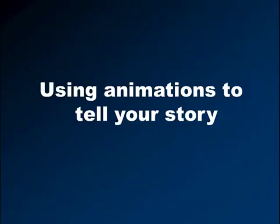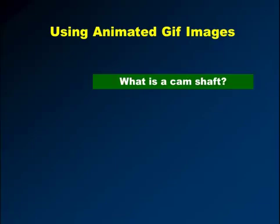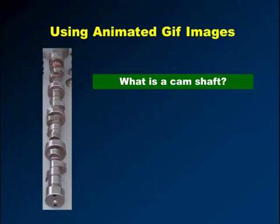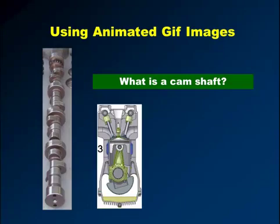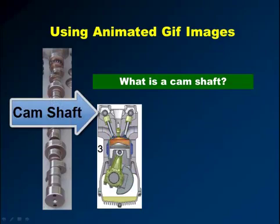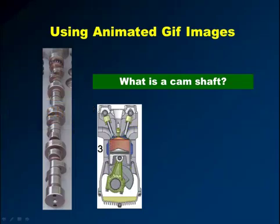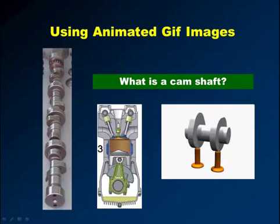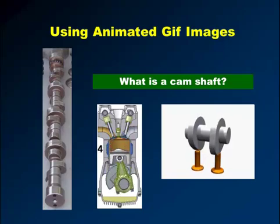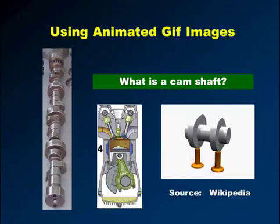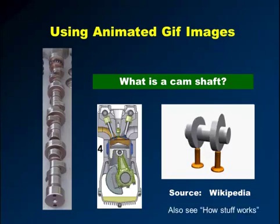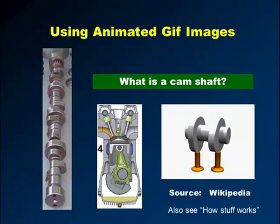The next thing is how to use animations to tell your story. One thing you can use is animated GIF images. For example, if I ask you what is a camshaft — I could show you a picture, but many people still wouldn't know what it is. If I go to Wikipedia and get one of these GIF images, it shows very clearly how a camshaft opens and closes the intake and exhaust valves in an engine. There are lots of images available from Wikipedia and other websites like HowStuffWorks where you can get lots of useful GIF animations.